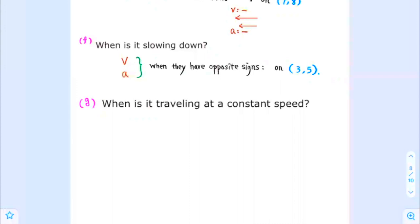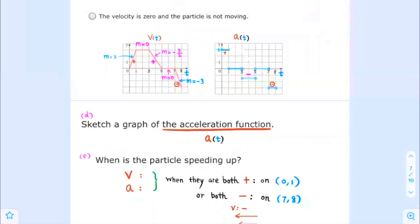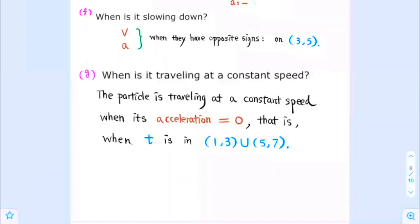When is the particle traveling at a constant speed? The particle is traveling at a constant speed when the acceleration is equal to 0. This happens when t is greater than 1 and less than 3, or when t is greater than 5 and less than 7. Using interval notation, that is when t is in the interval from 1 to 3, union 5 to 7.